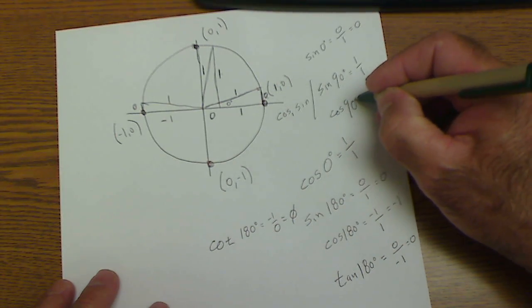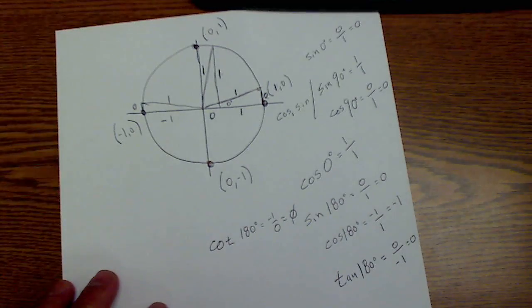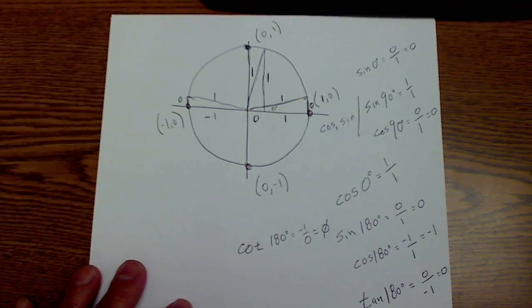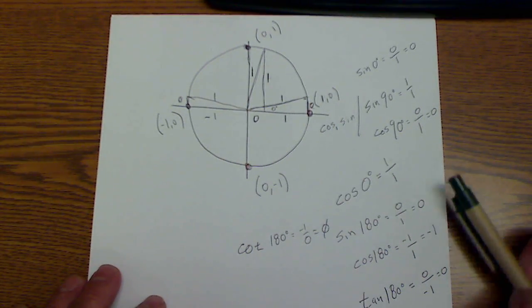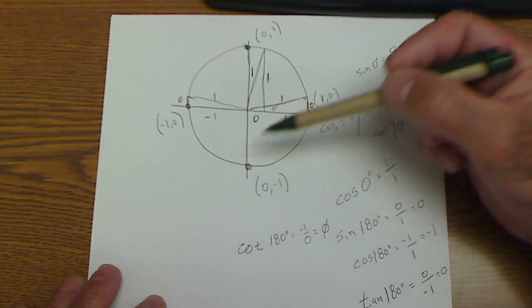Cosine of 90, that would be equal to your adjacent over your hypotenuse, which would just equal 0. So they're hard, I mean that's why they're called imaginary triangles, but that's how you find the exact value at 0, 90, 180, 270.